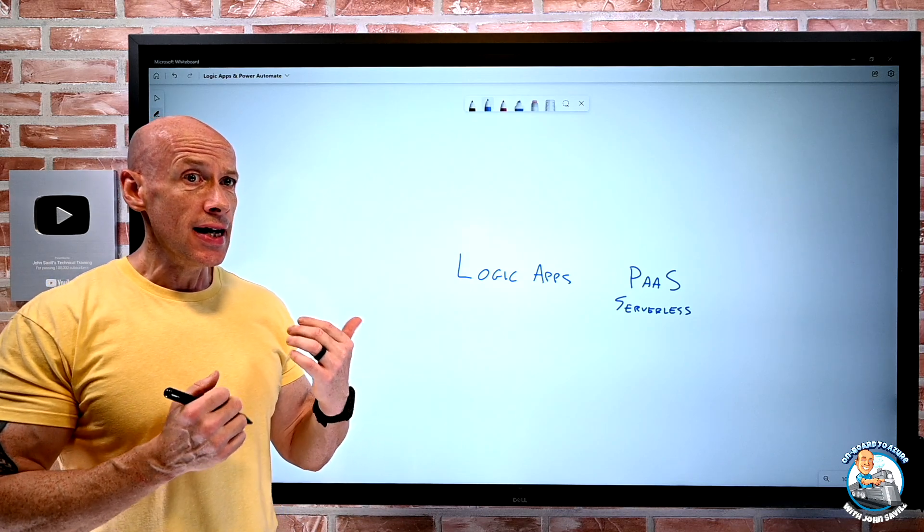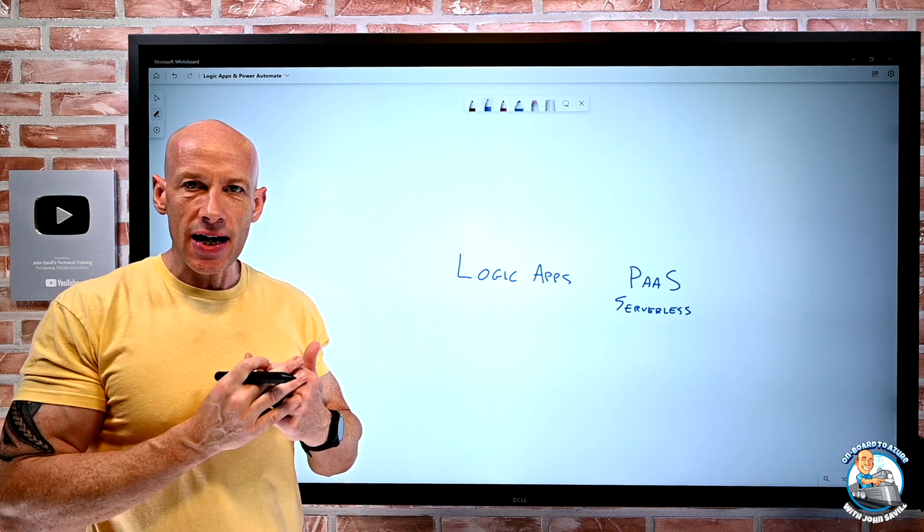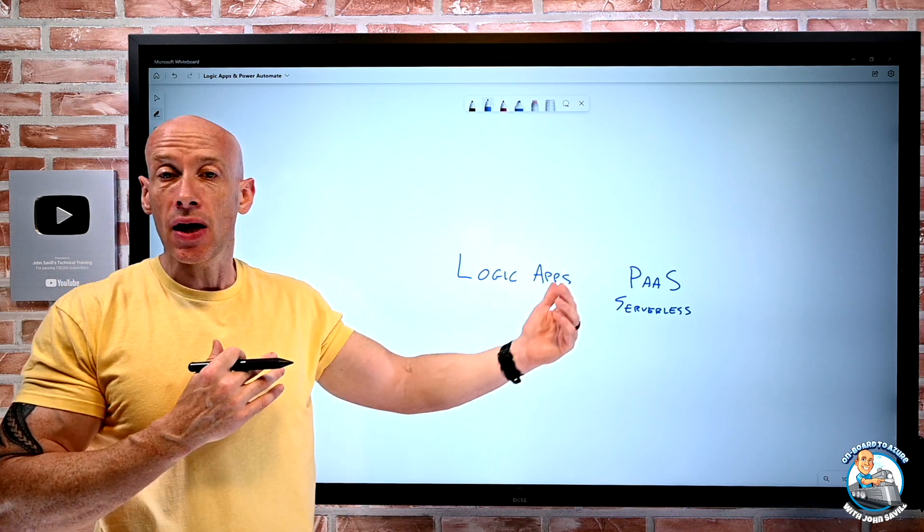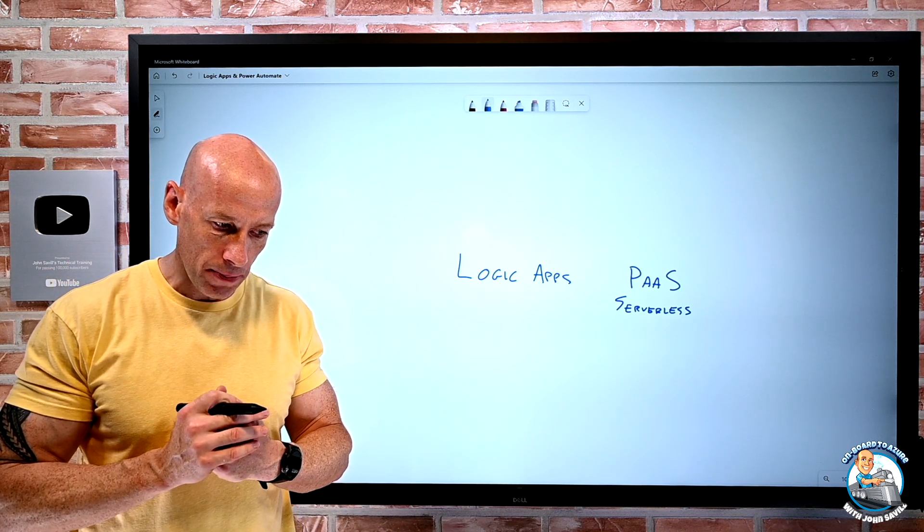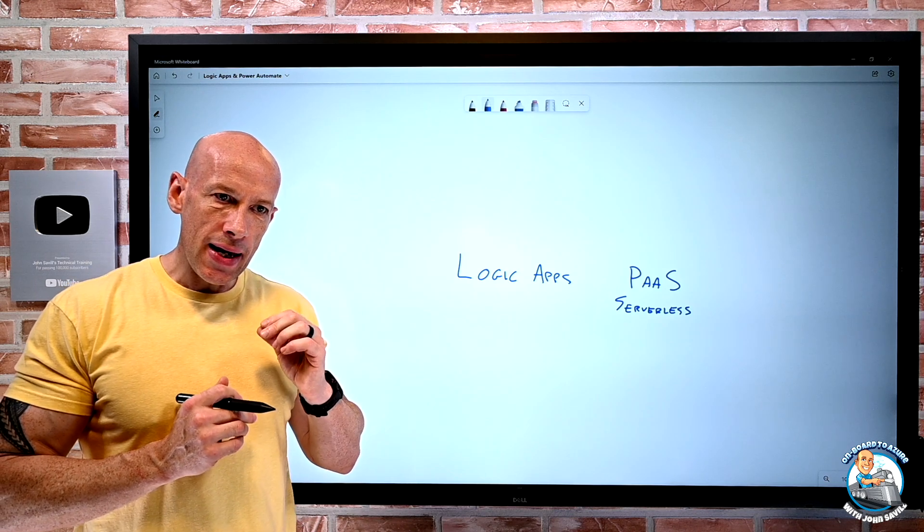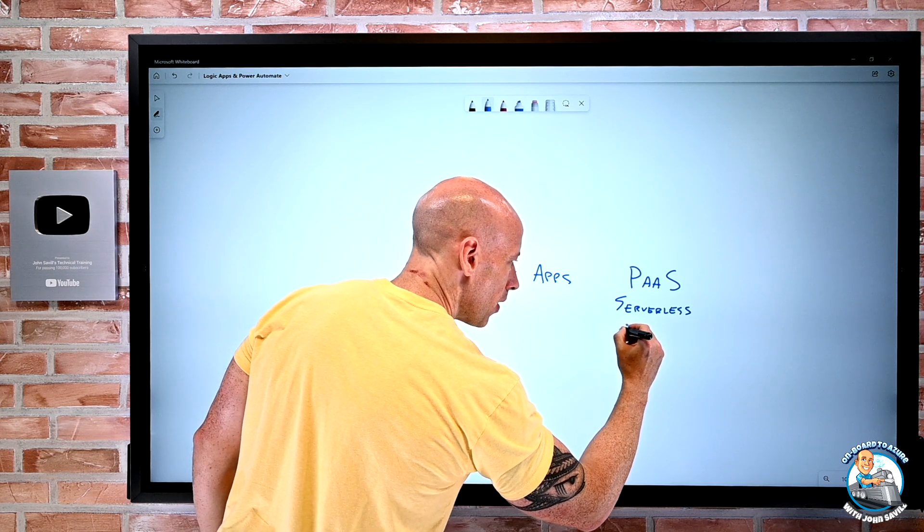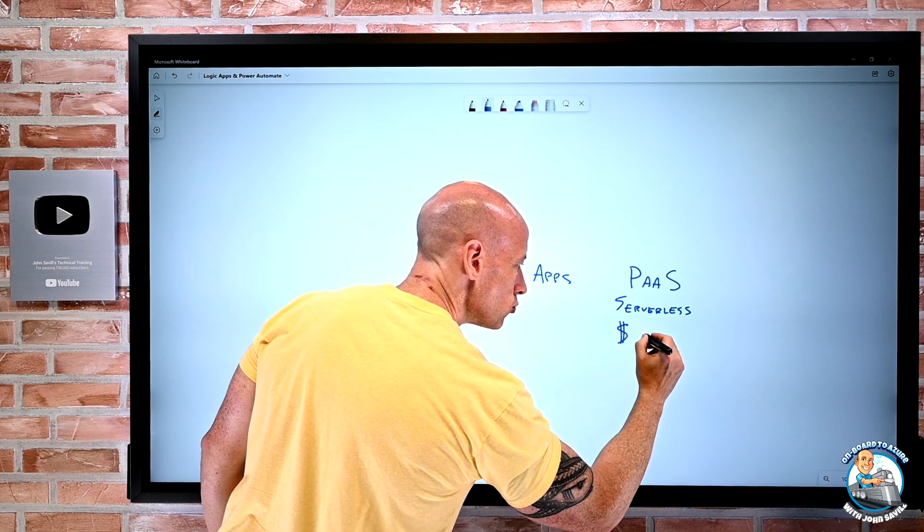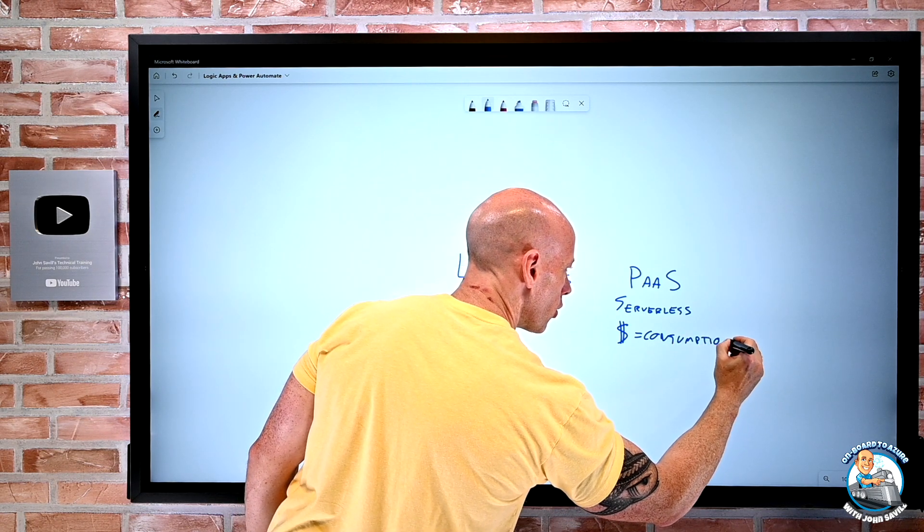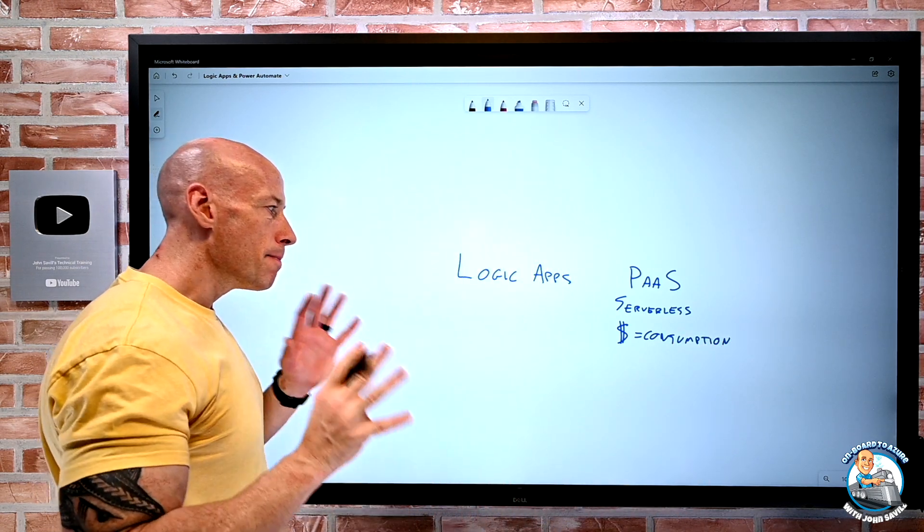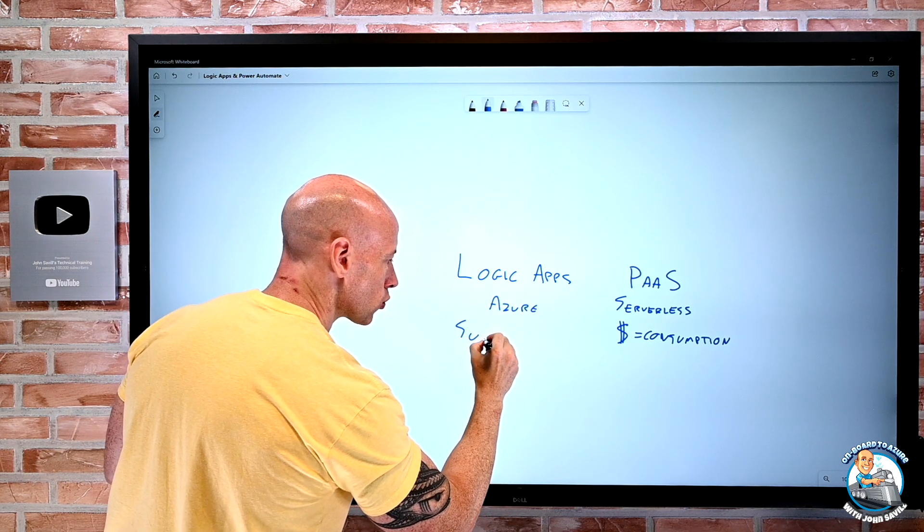And that's really the key part around this. When we talk about connectors, there are ways that Logic Apps really wrap some very friendly ways to interact with other APIs out there. And it also has some built-in native capabilities as well. Now, when I talk about it is consumption-based, that means that when I'm paying for it, my dollars is really based on the consumption, the work it does.